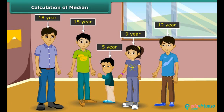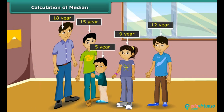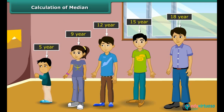The Goyangar family has five children, aged 9, 12, 5, 18, and 15. What is the age of the middle child? First of all, we should order the children's ages from least to greatest. Definitely, the age of the middle child is the middlemost number in the data set, which is 12. Likewise, you can find out the median of various data.